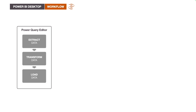Once we are happy with the data, we press Close and Apply, which applies the transformations to the entire dataset, closes the Power Query Editor, and loads the data into the Power BI data model. So we perform three key operations inside the Power Query Editor: first, extract raw data from the source; second, transform the raw data into clean and well-formatted data; and finally, load the clean data into the data model. In the world of data analytics and business intelligence, this process of extracting, transforming, and loading data is commonly referred to as ETL. So we can also say that Power Query Editor is a very powerful ETL tool.